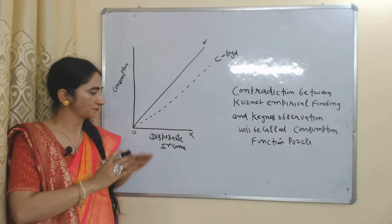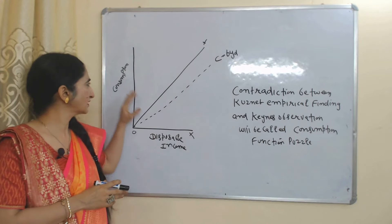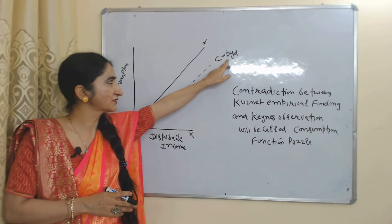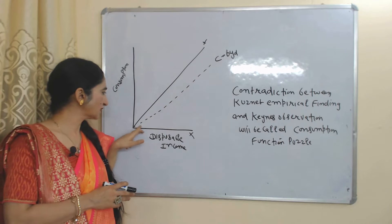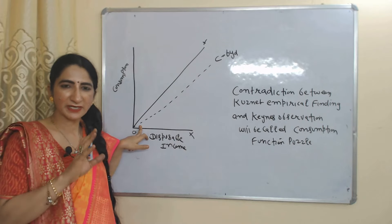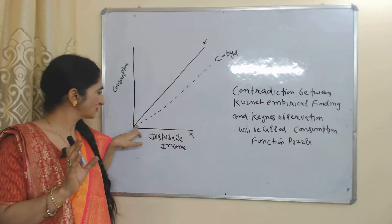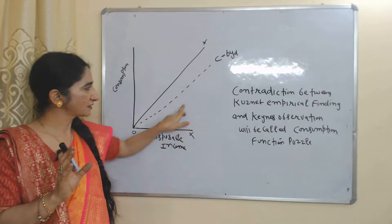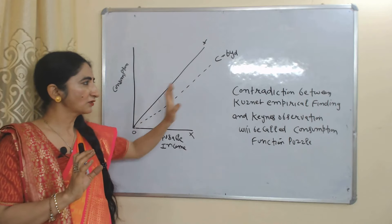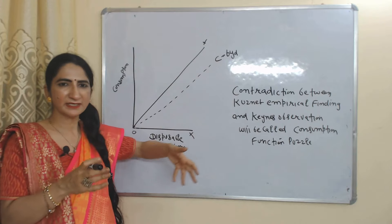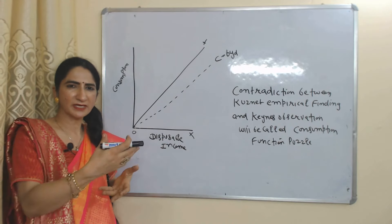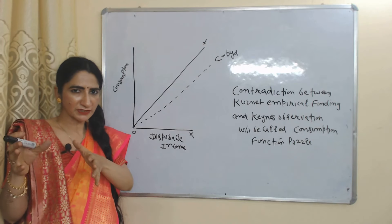Now we will see the diagram of Kuznets' consumption function. On the x-axis we have disposable income and on the y-axis we have the consumption function. This is the income line and the consumption function is C = bYd. The consumption curve starts from zero because Kuznets does not include autonomous expenditure — when income is zero, consumption is also zero. This consumption function shows that APC remains constant and does not fall as income increases. The contradiction between Kuznets' empirical findings and Keynes' observation is called the consumption function puzzle.